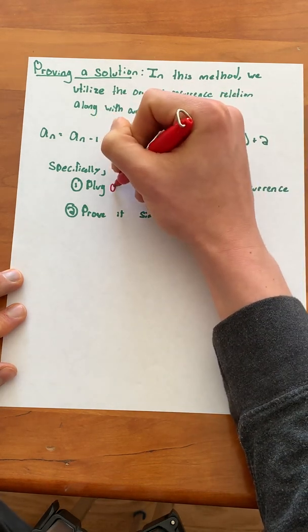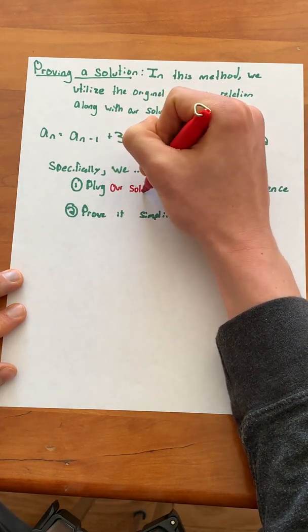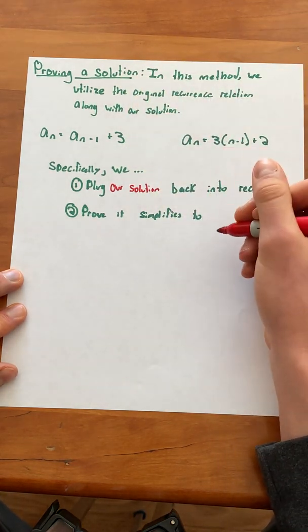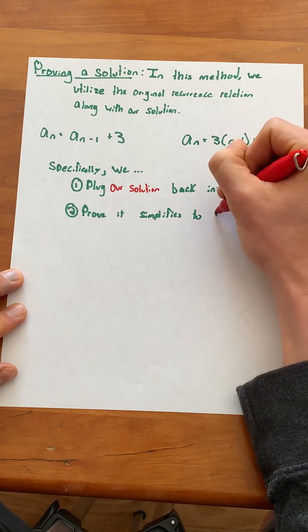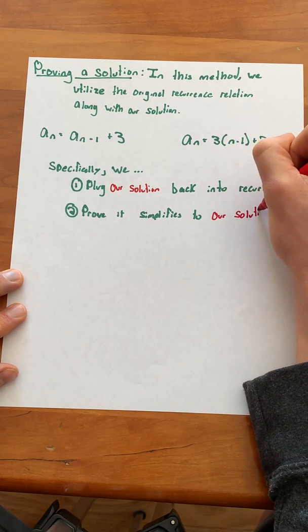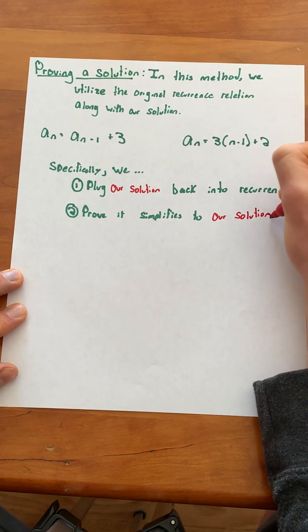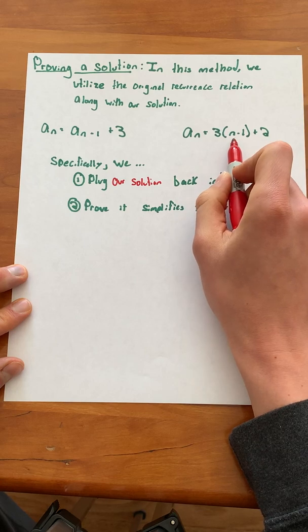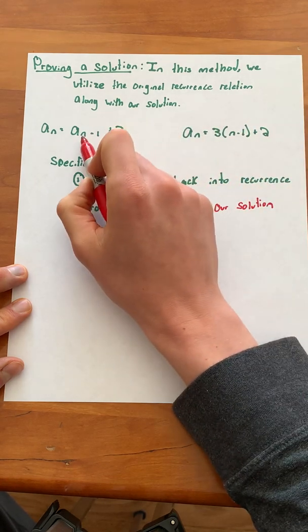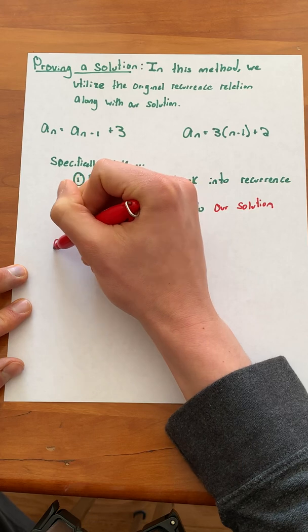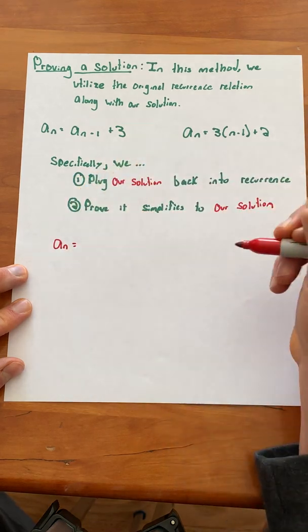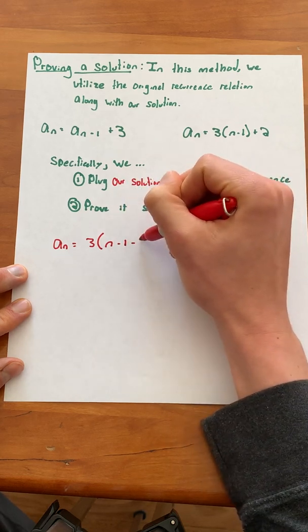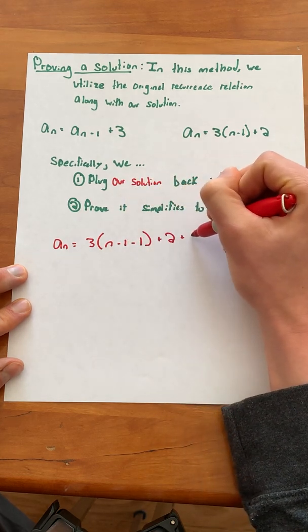Specifically, we plug our solution back into the recurrence relation and then we want to prove that it simplifies to our solution. So we begin by taking our recurrence relation and plugging in 3 times (n minus 1) plus 2 into a of n minus 1. So we'll get a of n equals 3(n minus 1 minus 1) plus 2 plus 3.